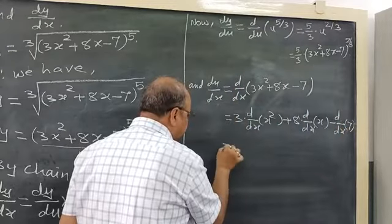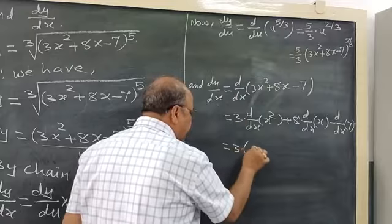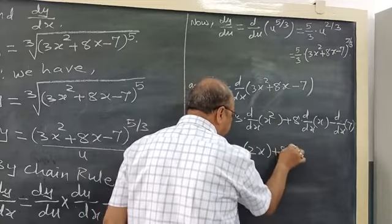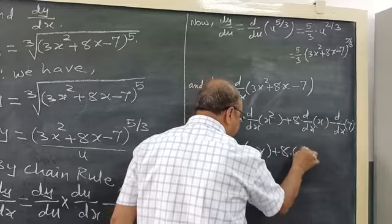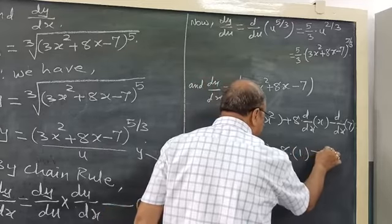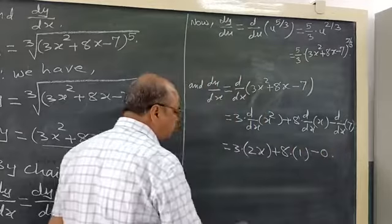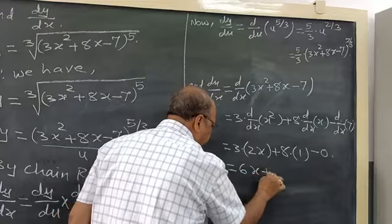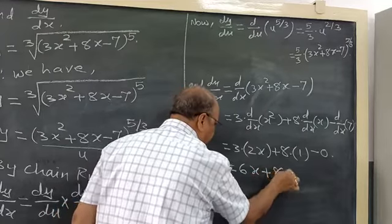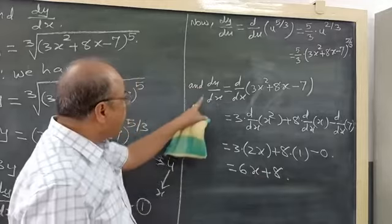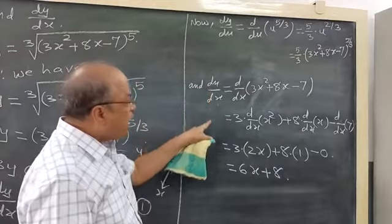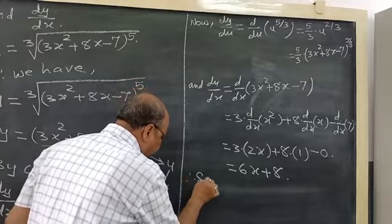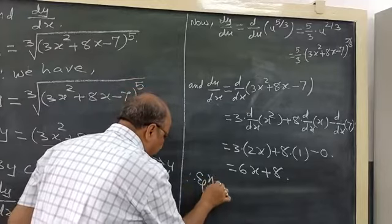Simplifying: 3 into 2x, plus 8 into 1, minus 0. Derivative of x² is 2x, derivative of x is 1, derivative of constant is 0. So du by dx = 6x + 8. Now we have both derivatives and equation 1.